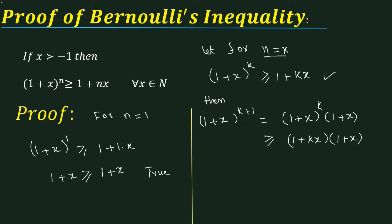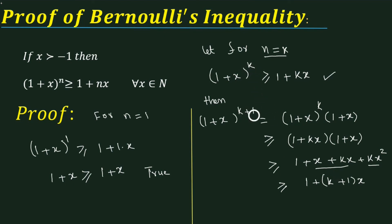This is greater than or equal to 1 plus x plus kx plus kx squared. We are neglecting the kx squared term here, so this is greater than or equal to 1 plus x plus kx. Taking x common, that gives k plus 1 times x. So here k becomes k plus 1, meaning the inequality is also true for the next integer which is k plus 1.